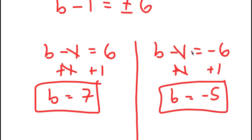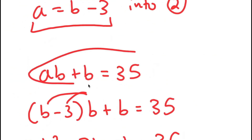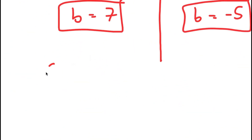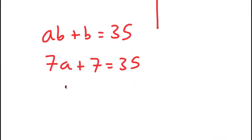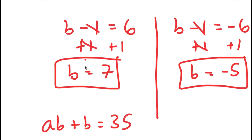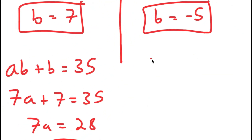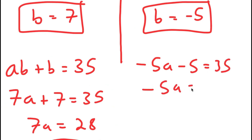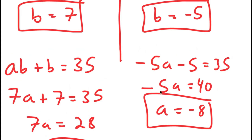Now I have to plug these back into AB plus B equals 35. If B equals seven, I get seven A plus seven is equal to 35, meaning seven A is equal to 28 and A equals four. So if A equals four, then B equals seven — this is one solution. And if B equals negative five, I get negative five A minus five is equal to 35, meaning negative five A is equal to 40 and A equals negative eight. So these are my two solutions.